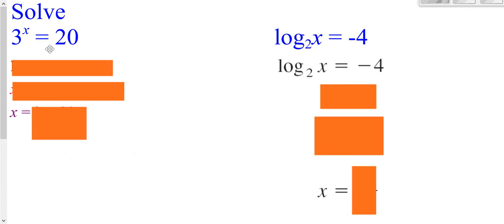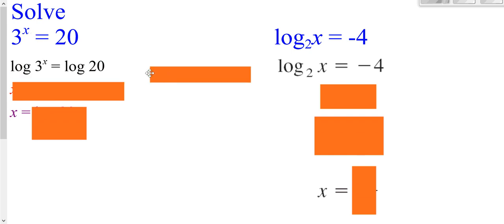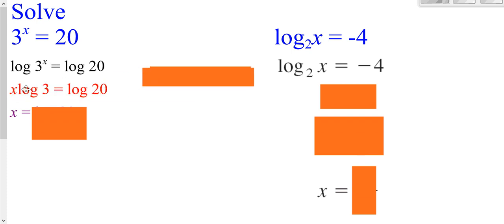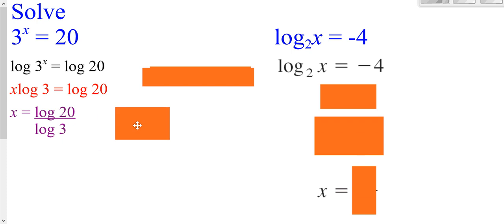To solve a problem like this, we'll probably have to use logarithms with a variable in the exponent, so we take the log of each side. I'm choosing a common log — you could have used a natural log, it would not make a difference. Now you have an exponent after a log, so you put that exponent in front. Now you just have your variable X multiplied by something, so divide by that to isolate X. Now we have our calculator-ready form.